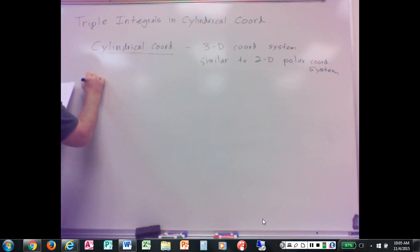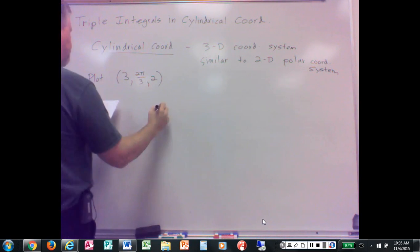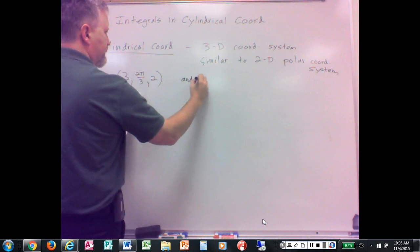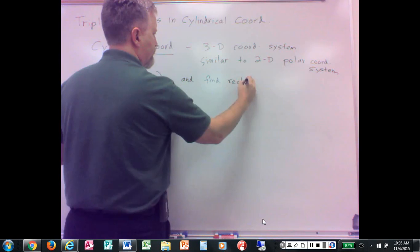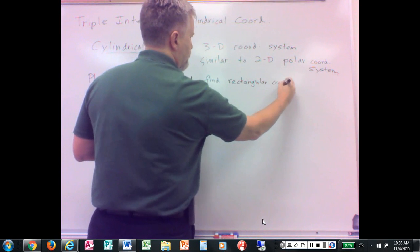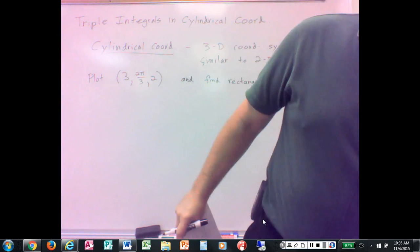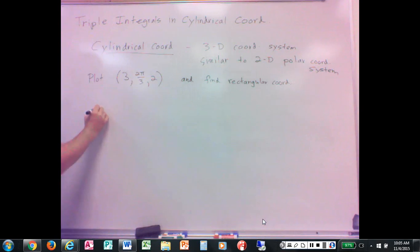All right. So let's plot our point three, two-thirds pi, two. That's what they ask here. All right. So xyz. All right. So this is cylindrical. So this is r, this is theta, and this is z. So the r is three, and theta is two pi over three. Well, kind of have to start with that, don't you? Theta is two pi over three.